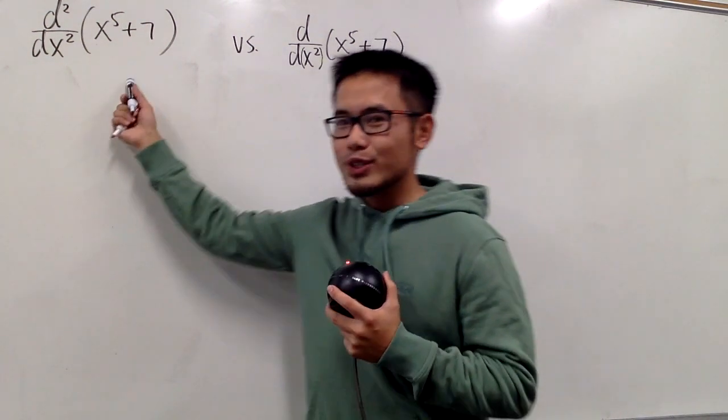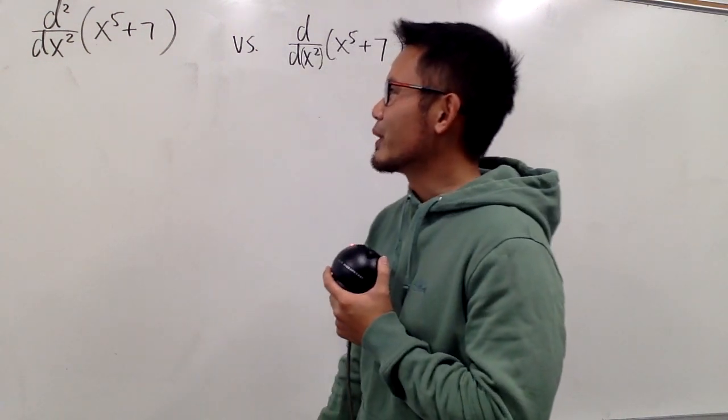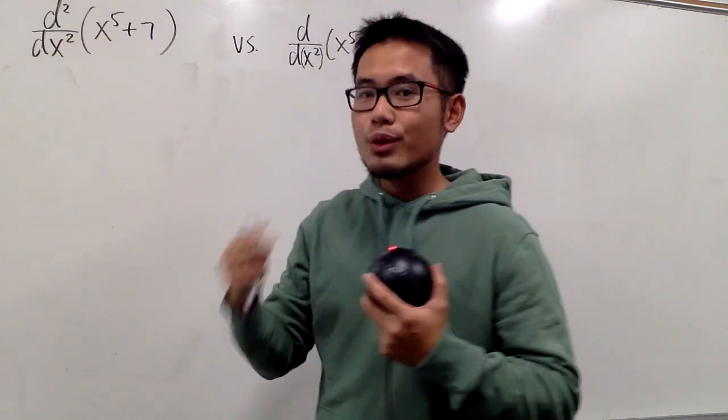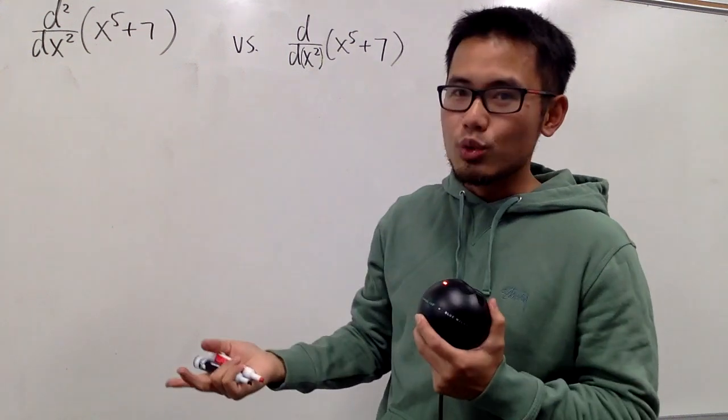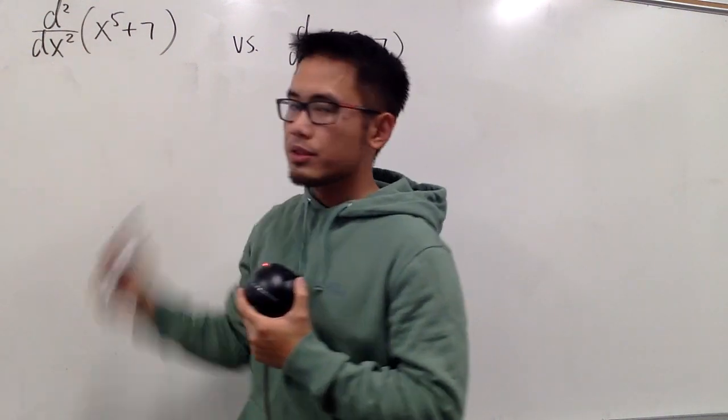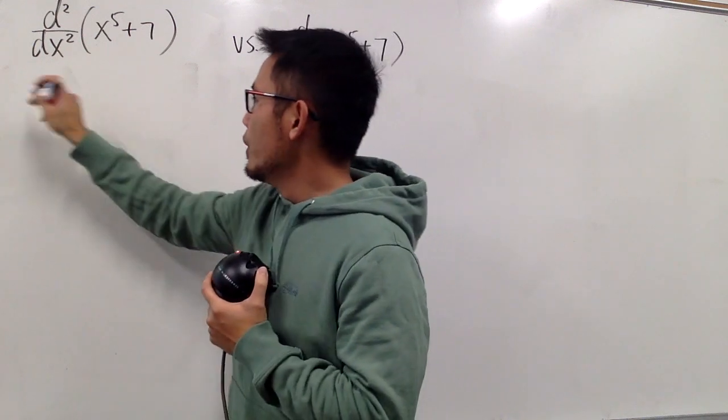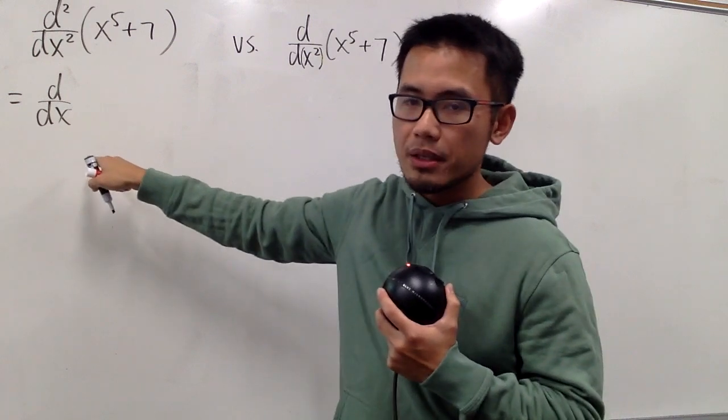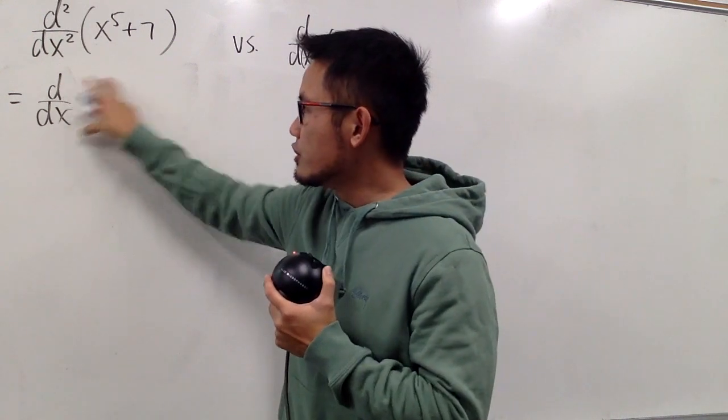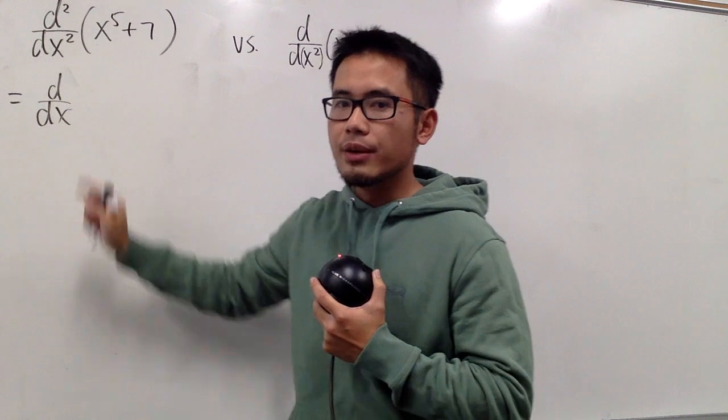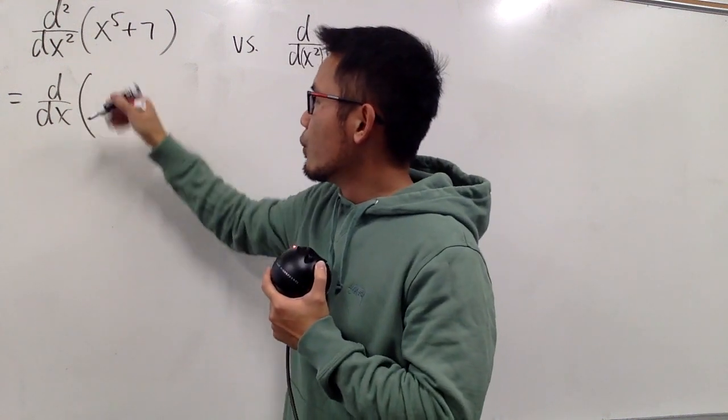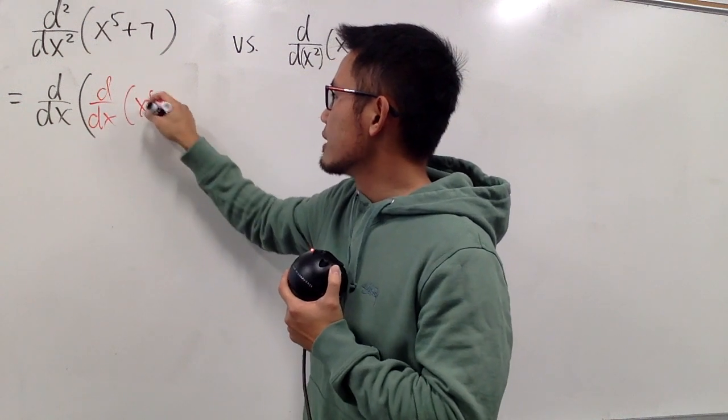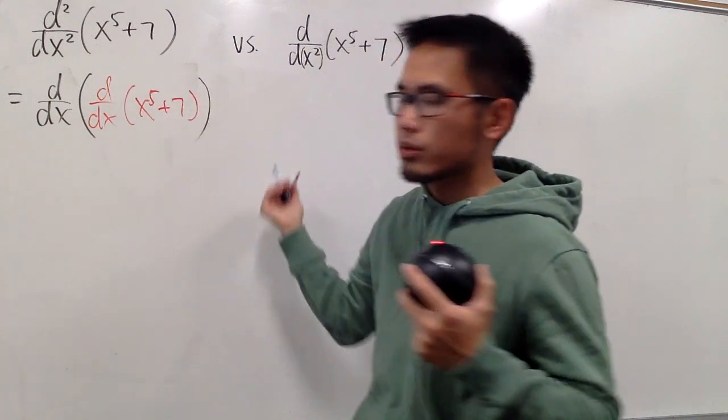Okay, let's do the first one. This notation just means that we are going to differentiate this function twice, so we can get the second derivative. When we see d² over dx², it means the following: we are just going to differentiate with respect to x. We differentiate d dx of this function, x to the fifth power plus 7, and we work this inside out.